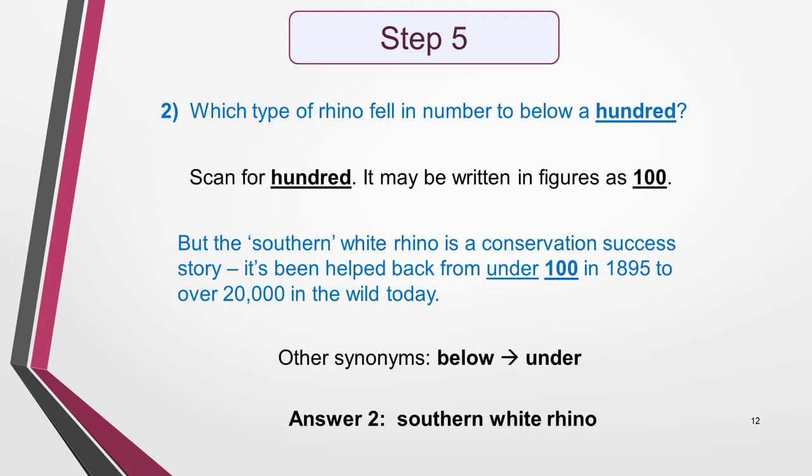For question 2, I scan for the keyword '100'. I suspect that it may be written in figures as 100 — this is a common trick that test setters like to use to try and catch you out. On scanning, I find that I'm right. It's in paragraph 2. It reads: 'But the southern white rhino is a conservation success story. It's been helped back from under 100 in 1895 to over 20,000 in the wild today.' I now know where the answer is located. I also notice that 'below' in the question and 'under' in the answer are synonyms, so that's another clue that I'm looking in the right place. I go back and read the question again to find out what information I need, then read this sentence in detail to find the actual answer. It is: the southern white rhino.